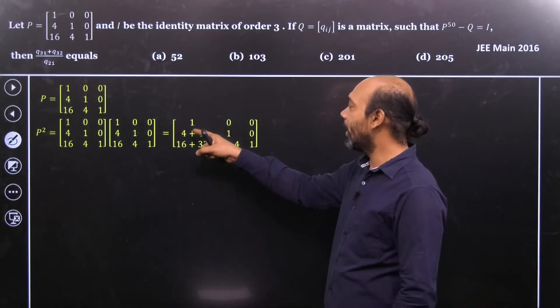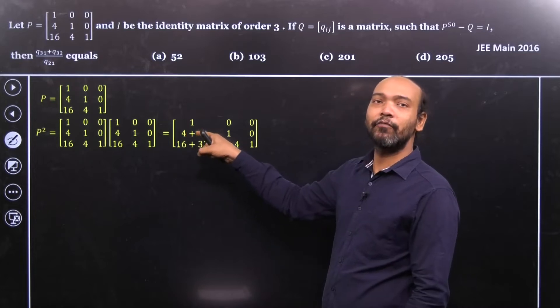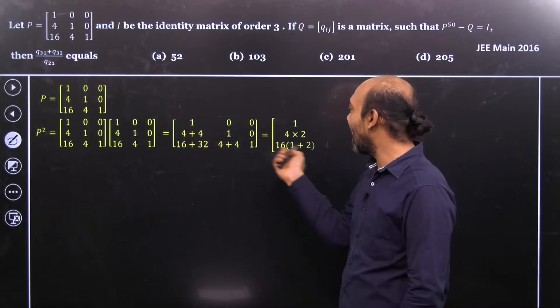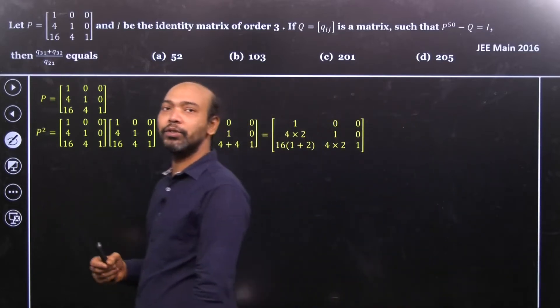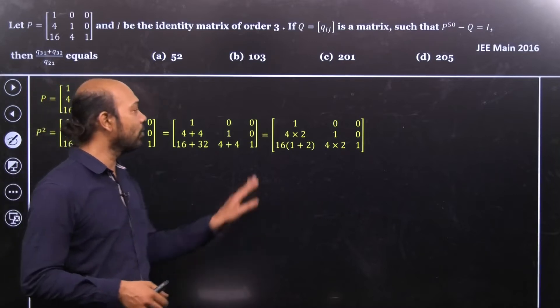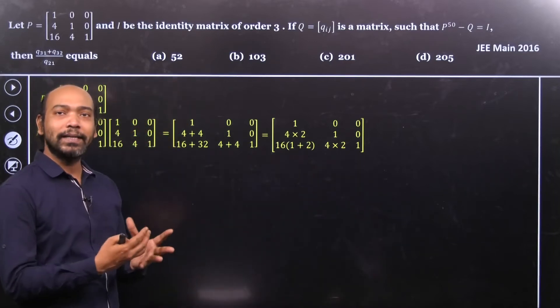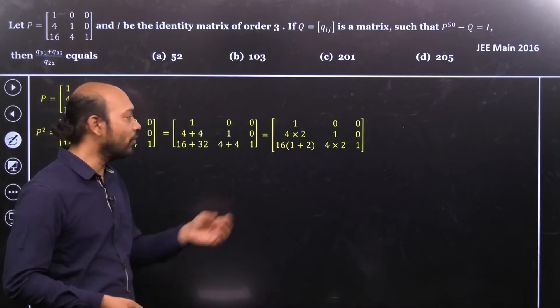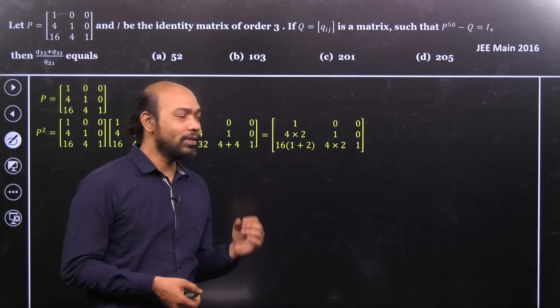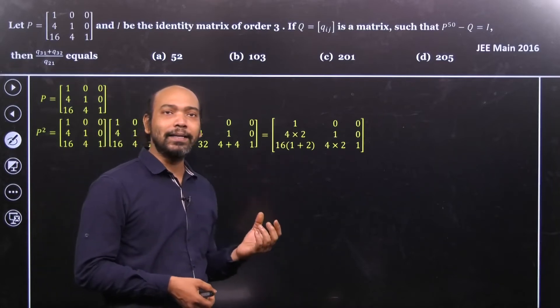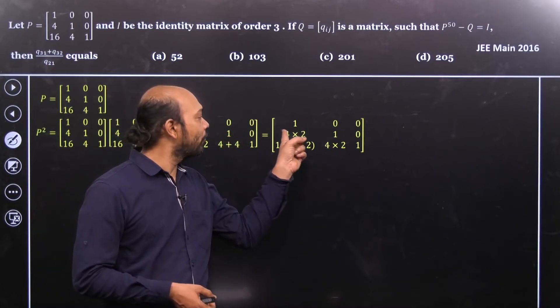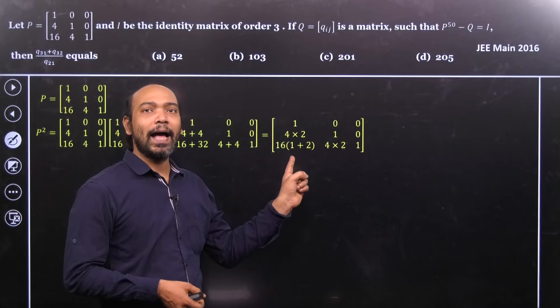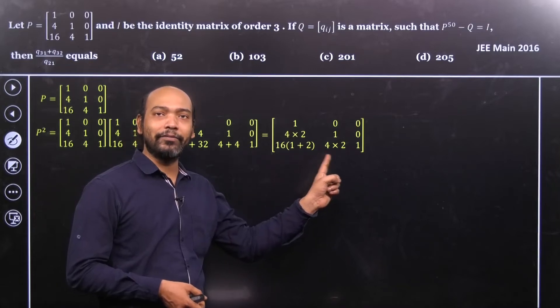Now see that here we can take 16 common and here 4 is multiplied. So it can be written as in this form that 4 into 2, 16 into 1 plus 2 into 4 into 2. Because we are looking for some pattern and we already get some pattern. Now see that, what's that? It's the pattern is that if it is P square, that 4 should be multiplied by 2 and 1 plus 2 will be added.